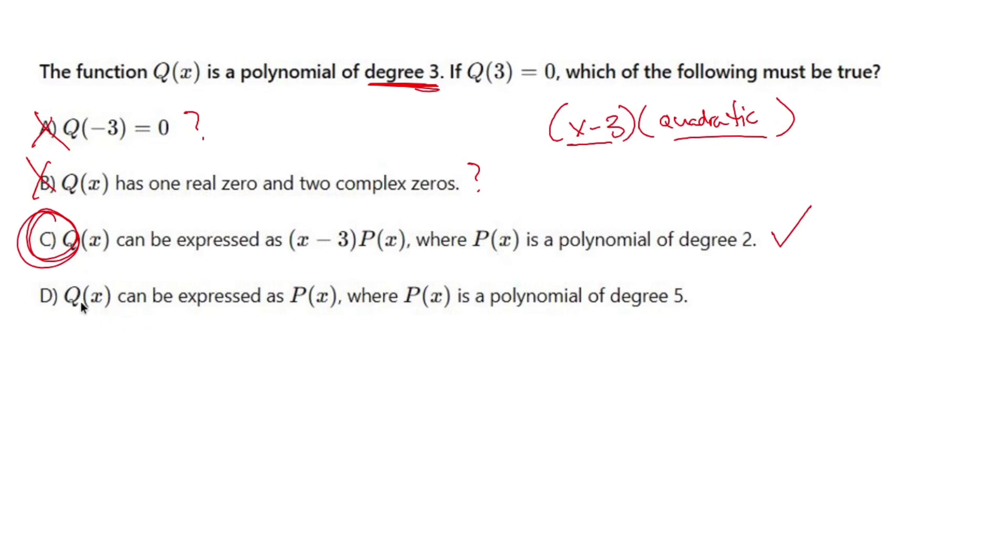But let's just make sure. Q(x) can be expressed as P(x), where P(x) is a polynomial of degree five. I don't know where that came from. That can't be true. These are possibilities, but this is definitely not. So C has got to be the only one that makes sense here. C is going to be my answer.